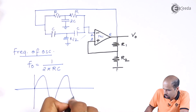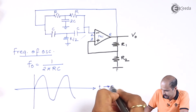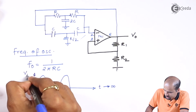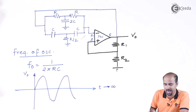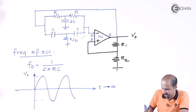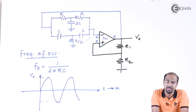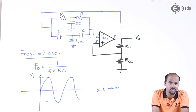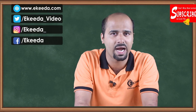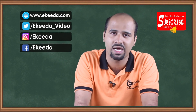The output waveform will be a sinusoidal waveform, obviously of low frequency. This is time T tending to infinity, and this is the expected output signal V_O. The positive half cycle and the negative half cycle peak-to-peak values will be the same, giving sustained oscillation as time tends to infinity. This is how we have developed the Twin T oscillator with a low pass filter circuit and high pass filter circuit connected in parallel — that is the beauty of the Twin T oscillator. Thank you so much for watching.